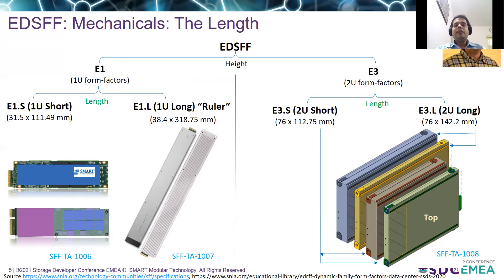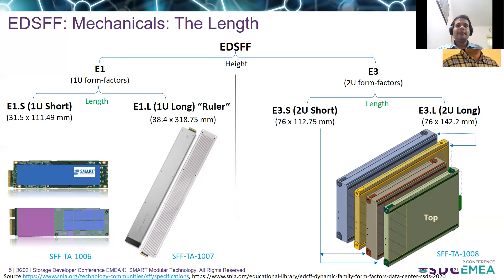Similar to E1, the E3 also defines two different lengths: E3.S which stands for 2U short, and E3.L which stands for 2U long. The mechanical specification for all E3 form factors is defined in a single specification document, SFF-TA-1008.